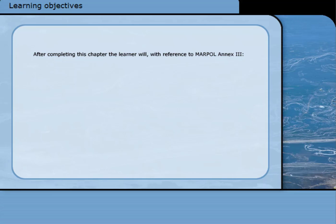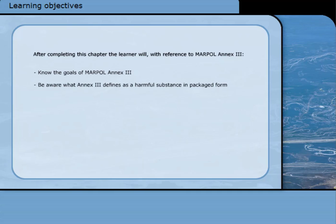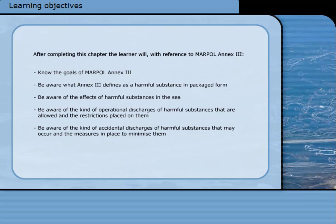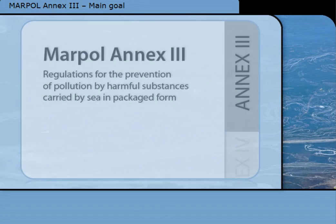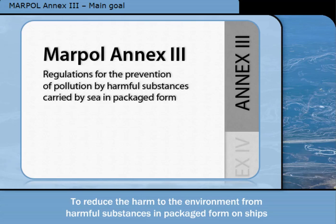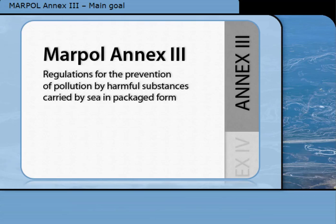After completing this chapter, the learner will, with reference to MARPOL Annex 3, know the goals of MARPOL Annex 3, be aware what Annex 3 defines as a harmful substance in packaged form, be aware of the effects of harmful substances in the sea, be aware of the kind of operational and accidental discharges of harmful substances that are allowed and the measures in place to minimize them. The main goal of MARPOL Annex 3 is to reduce the harm to the environment from harmful substances from ships. Annex 3 applies to substances carried in packages rather than in bulk, where Annex 2 applies.